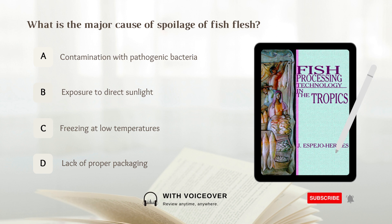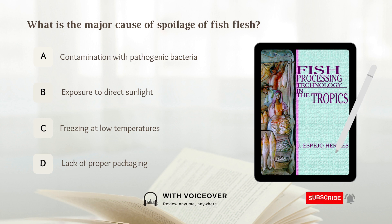What is the major cause of spoilage of fish flesh? A. Contamination with pathogenic bacteria. B. Exposure to direct sunlight. C. Freezing at low temperatures. D. Lack of proper packaging. Answer: A. Contamination with pathogenic bacteria.